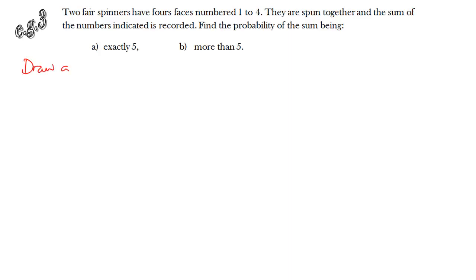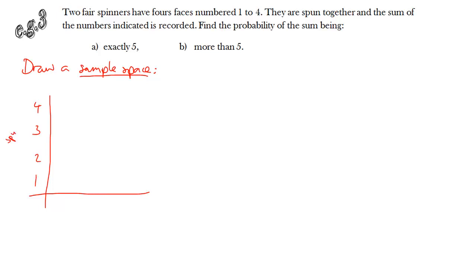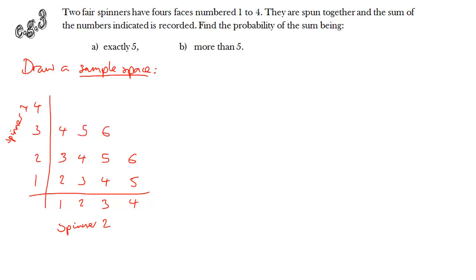Moving on to spinners — examiners love spinners. We've got two of them, each with four numbers: one, two, three, four. They are fair spinners, so outcomes are equally likely. We spin both and add the values together to find the sum. The first thing to do is draw the sample space as a grid. There are 16 different options — for instance, getting a three on spinner one and a four on spinner two gives a sum of seven.